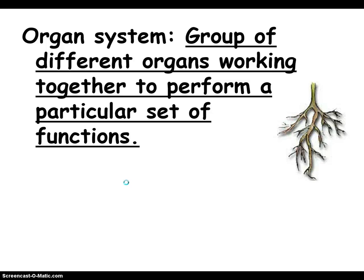Next, we have an organ system — a group of different organs working together to perform a particular set of functions. Let's stop on that word 'different.' By different, we mean not the same, like one and another — those are two different things because they're not the same thing. It doesn't have to be that they look different; it could simply be that they are two organs that look similar, but since they're not the same thing, they're different and we've got an organ system. So like this root over here and this root over here are both roots, but combined together they create an organ system.